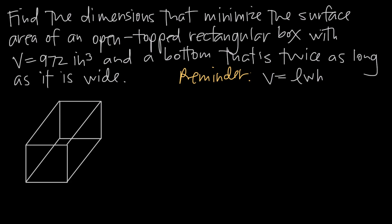In this video, we're doing an applied optimization problem. We've been asked to find the dimensions that minimize the surface area of an open-topped rectangular box that has a volume of 972 cubic inches and a bottom that is twice as long as it is wide. Whenever you're doing an applied optimization problem, identify the word minimize or maximize. Here, we need to minimize the surface area, so we're going to need an equation for surface area.